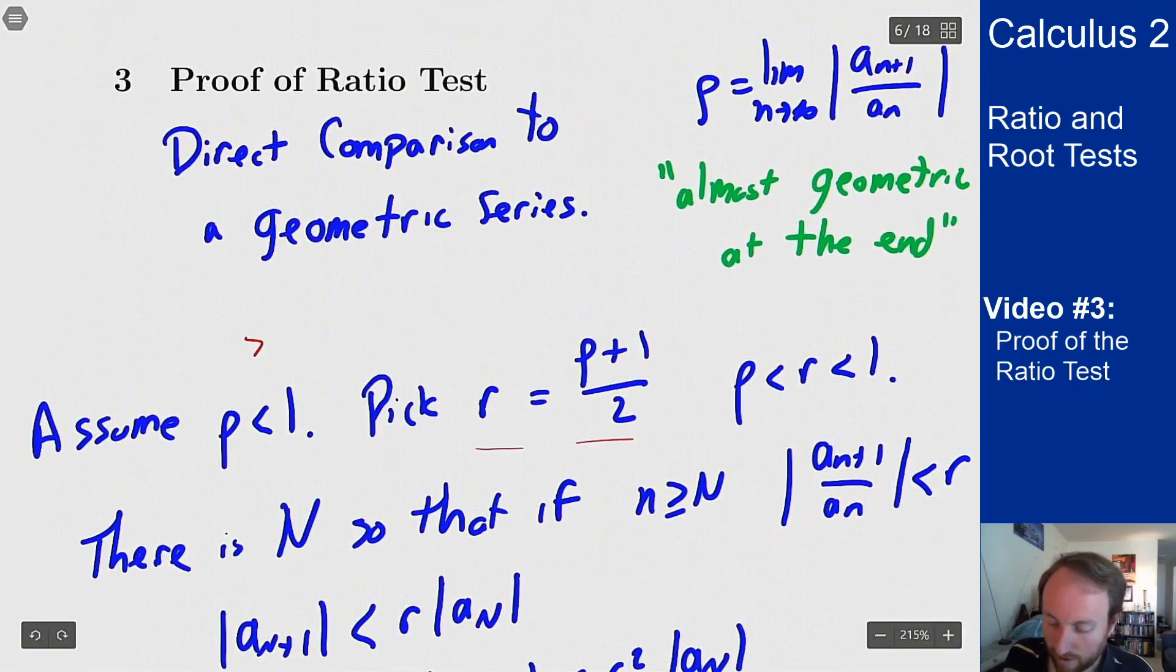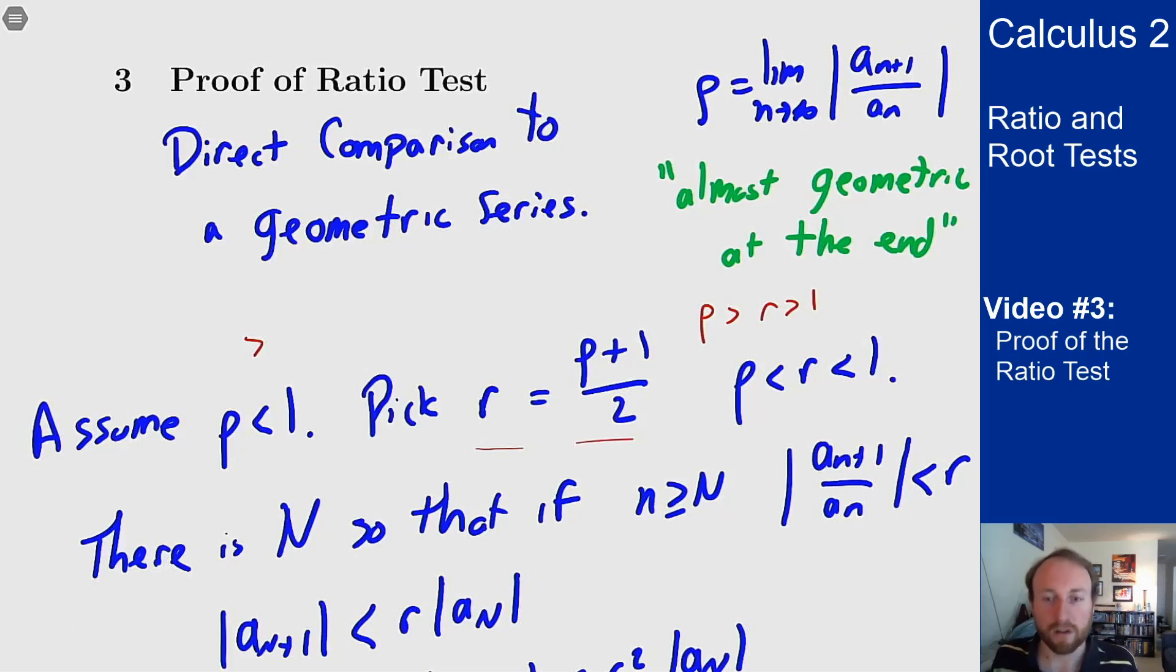And so the same thing holds except all my inequalities now go backwards. I know that my series is now bigger than this geometric series for r because I limit to ρ which is bigger than r.